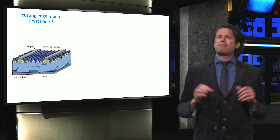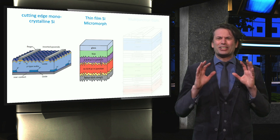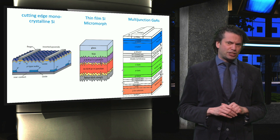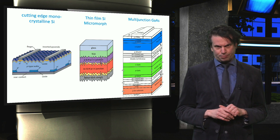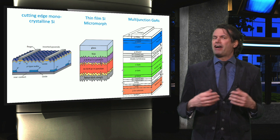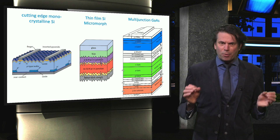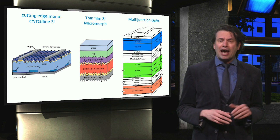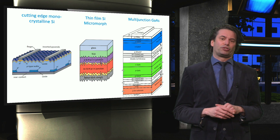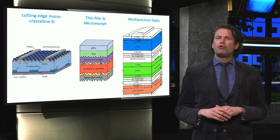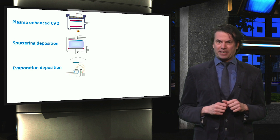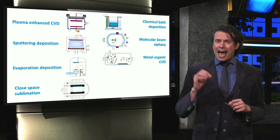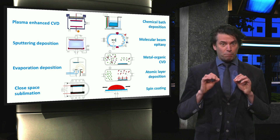You will obtain an in-depth understanding of the entire crystalline silicon solar cell landscape, including cutting-edge monocrystalline-based solar cells. You will also learn about the various module architectures employed for thin-film technologies, such as thin-film silicon micromorphous structures and high-performance gallium arsenide solar cells. Finally, you will obtain the ability to design the concepts and fabrication processes of various photovoltaic technologies, and the characterization of module performance.